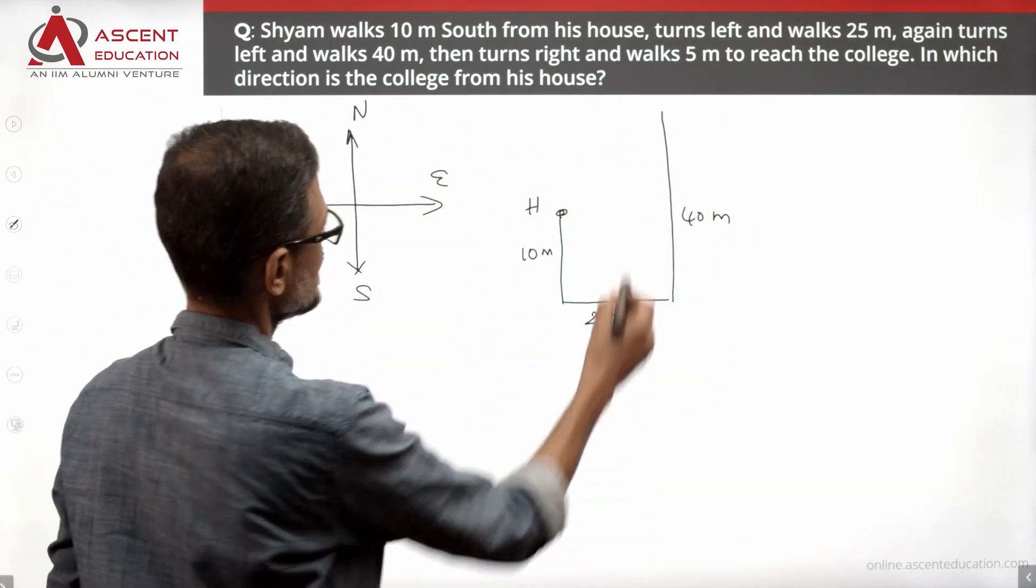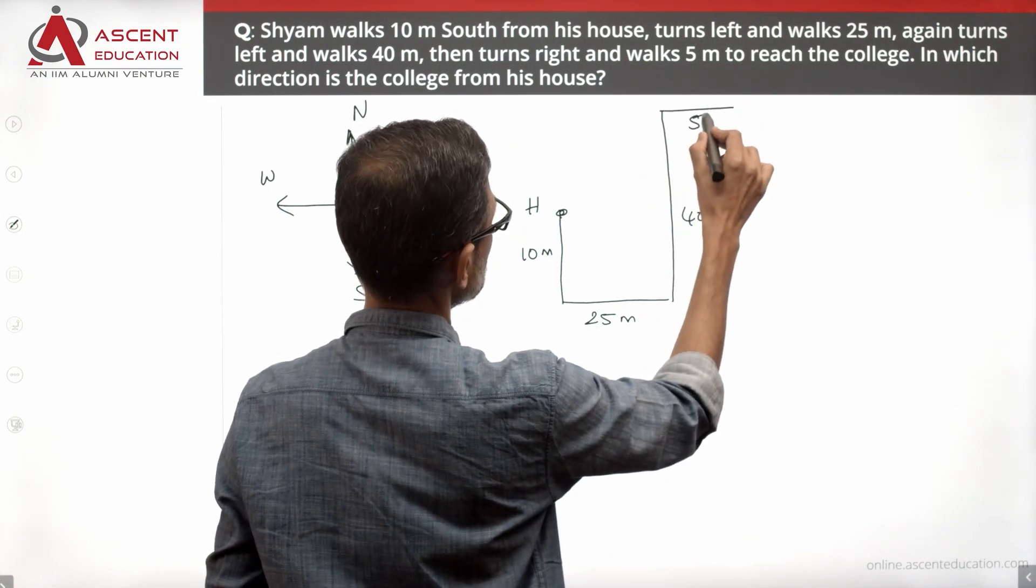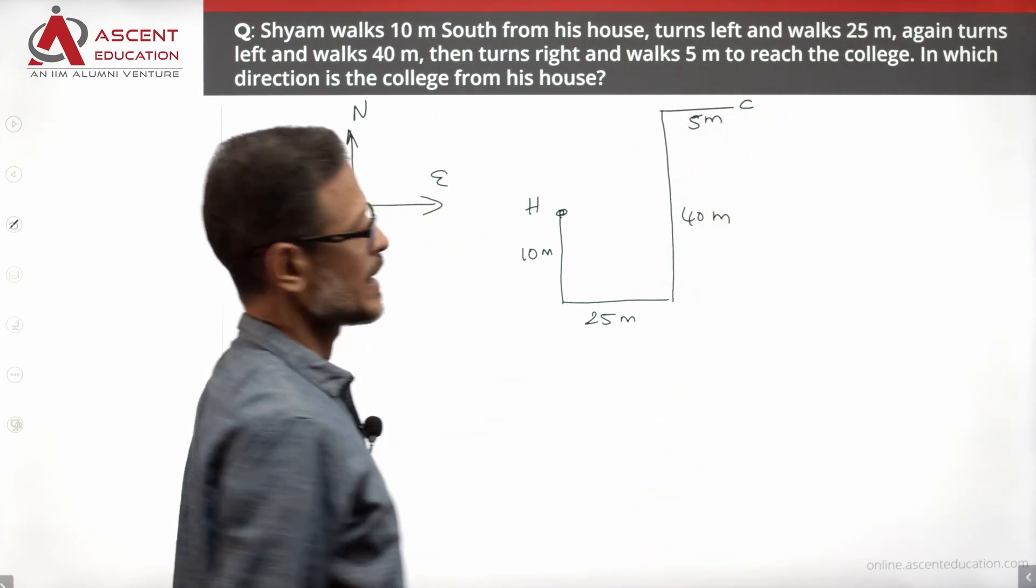And then turns right. At this point, he is turning right and then he is walking 5 meters to reach his college. This is where his college is.